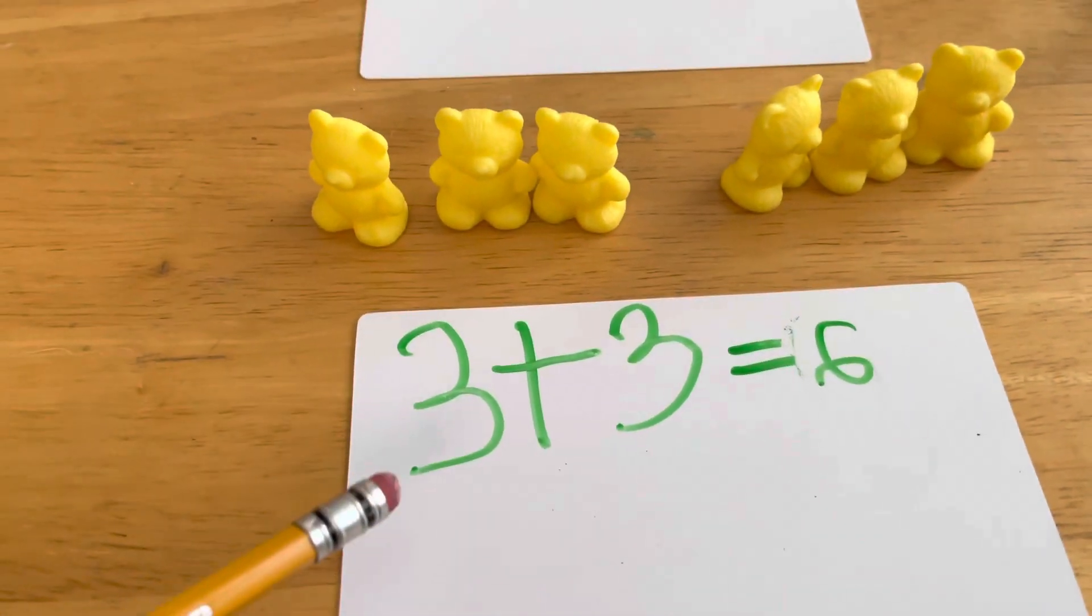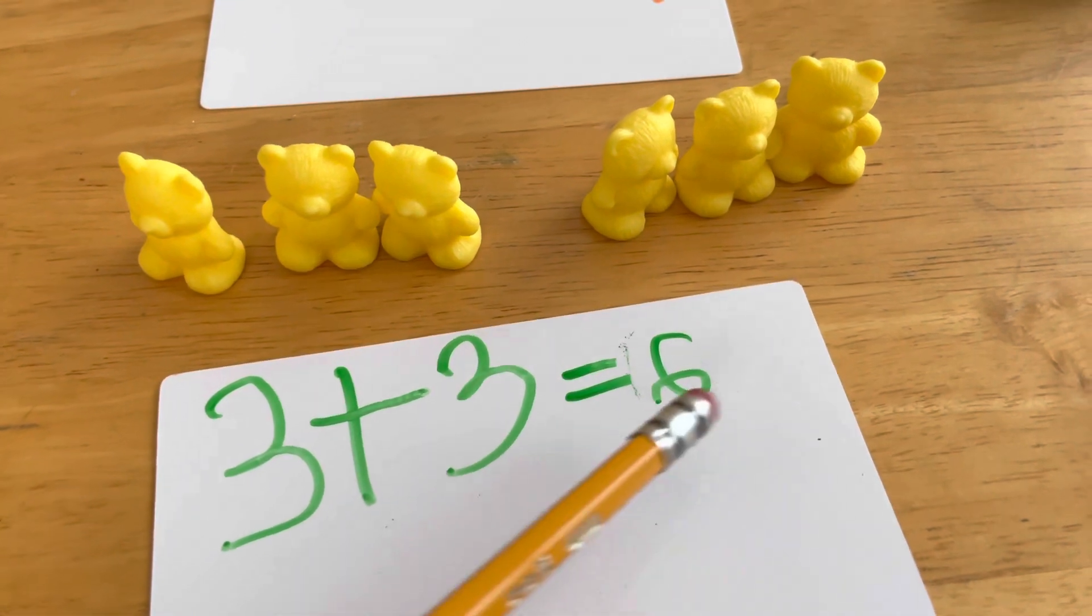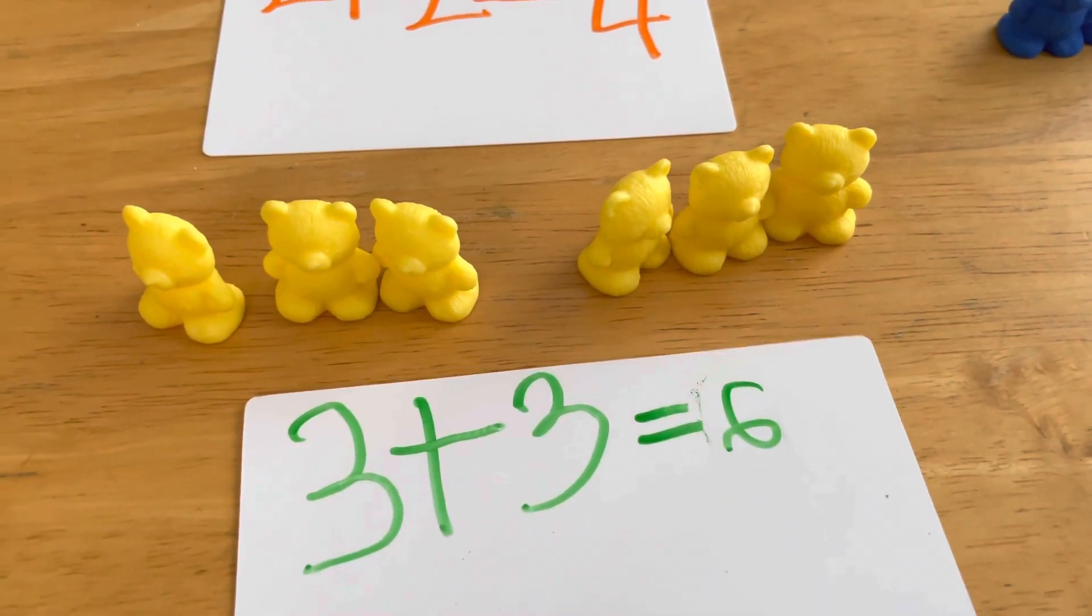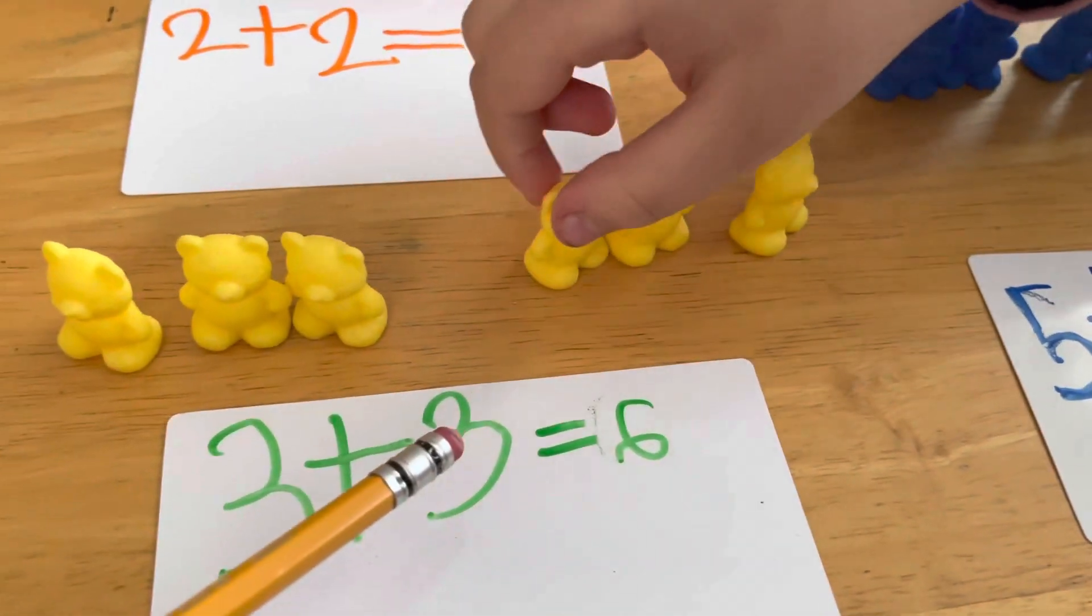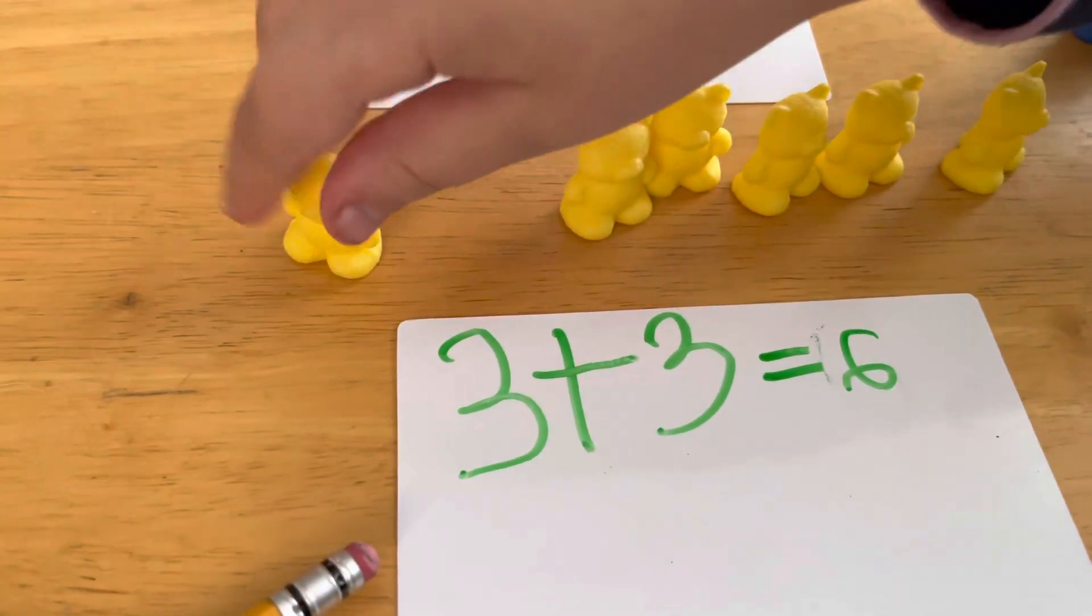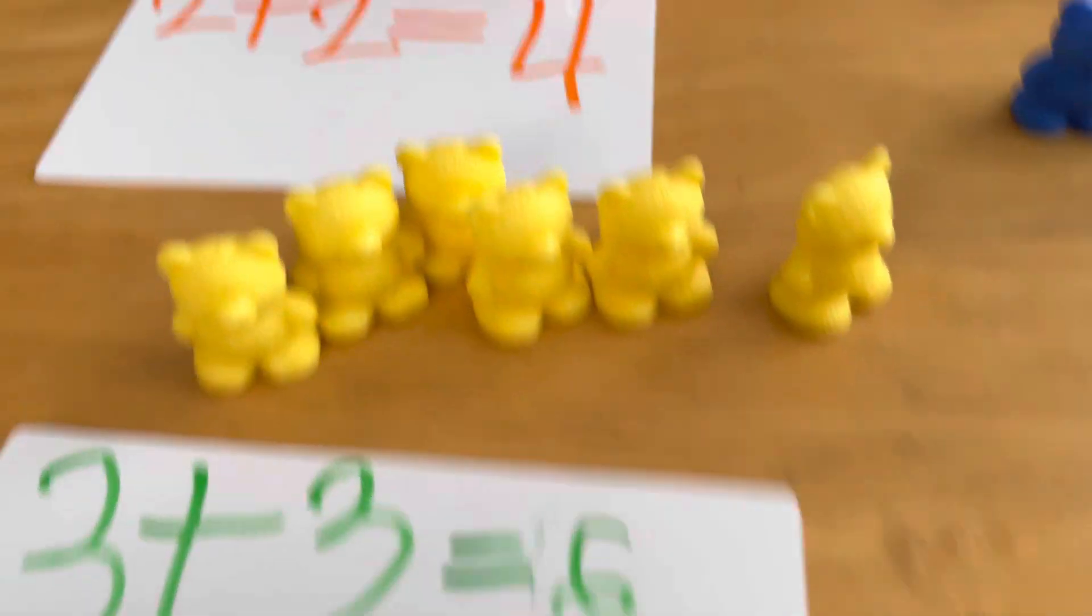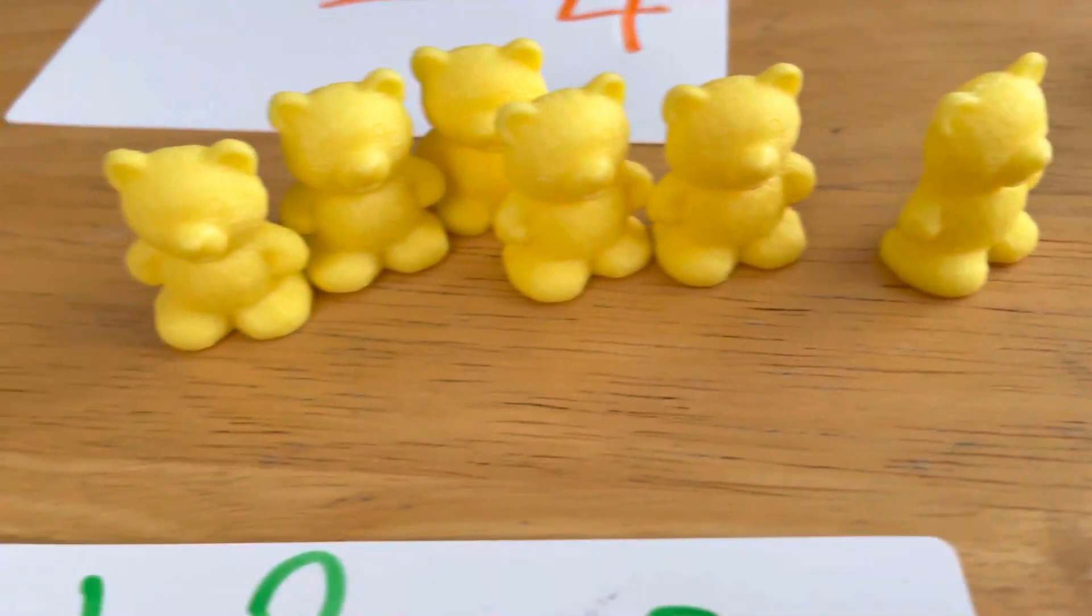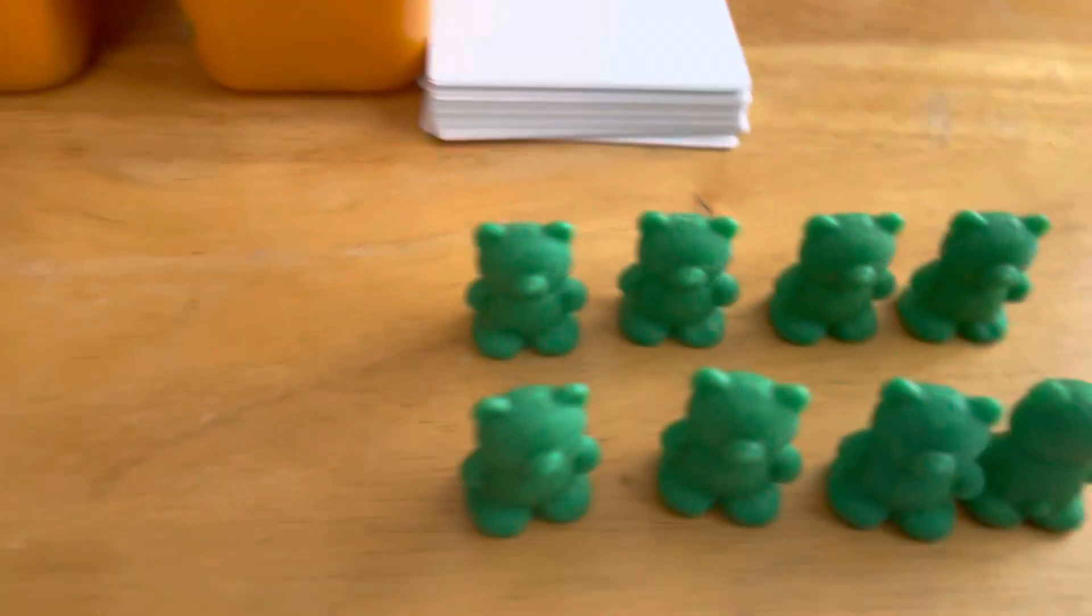Okay, let's go to these bears. Three plus three equals six. What are those little guys? Bears. Six yellow bears. Okay, all right.